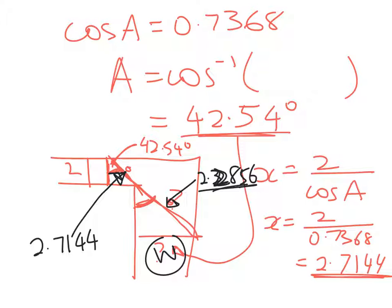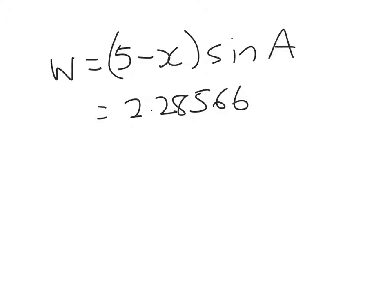So what's w? Well, w was equal to 5 minus x sine a. Oh sorry, of course, we do need that. So this bit here is the 5 minus x. w equals 5 minus x sine a. So that was my 2.2856, so my shorter bit of ladder, times sine of 42.54 degrees. And that works out to be 1.55 meters.